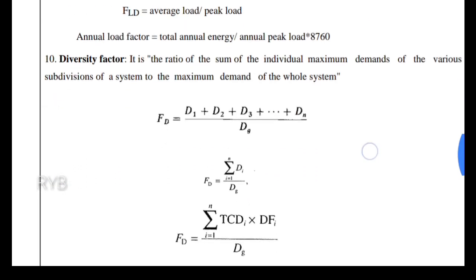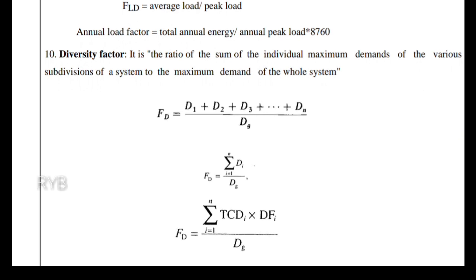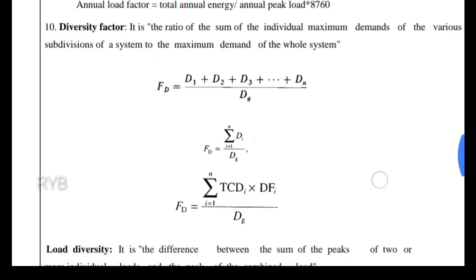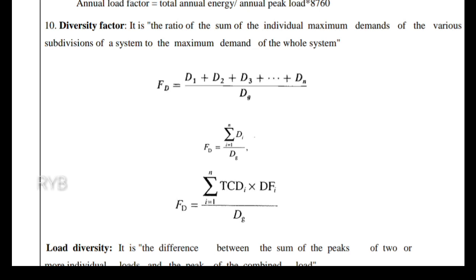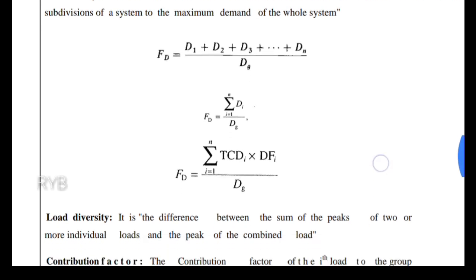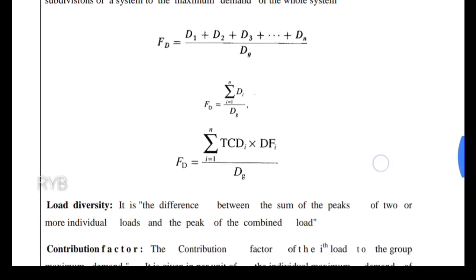The diversity factor can be represented by the formula: Fd = (D1 + D2 + D3 + … + Dn) / Dc, where D1, D2, D3 … Dn are the individual maximum demands of various subdivisions and Dc is the group maximum demand. This can also be written using summation notation as: (Σ i=1 to n Di) / Dc.